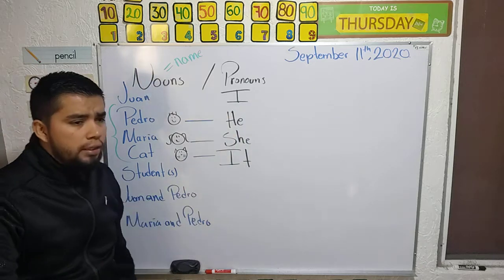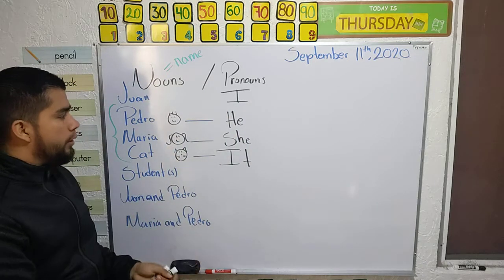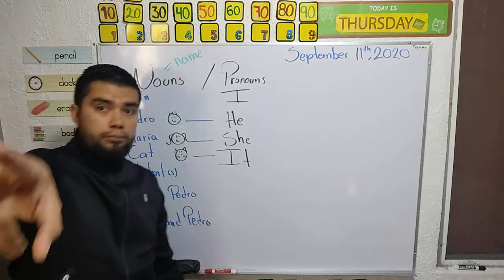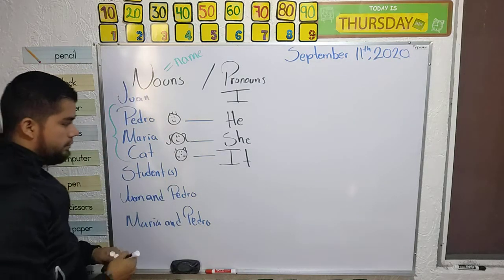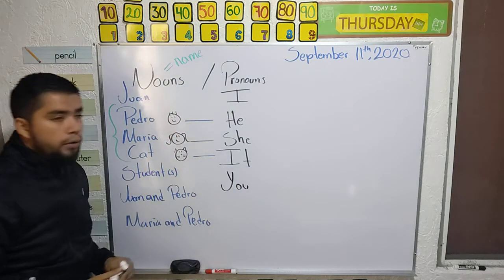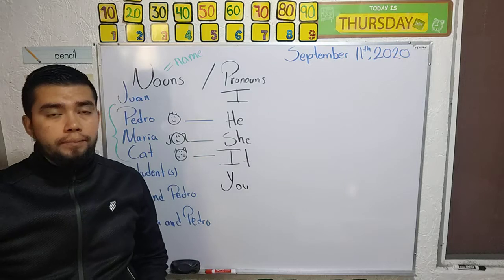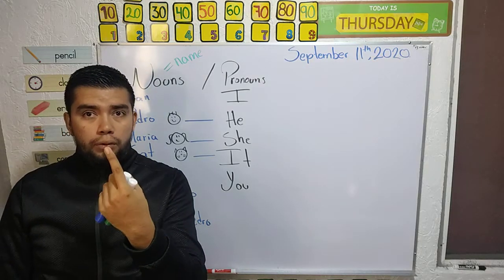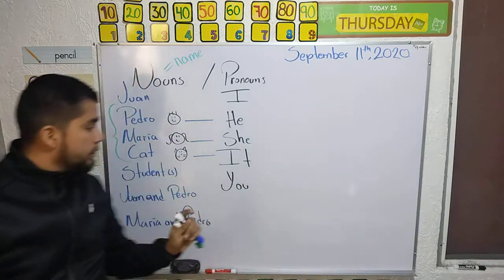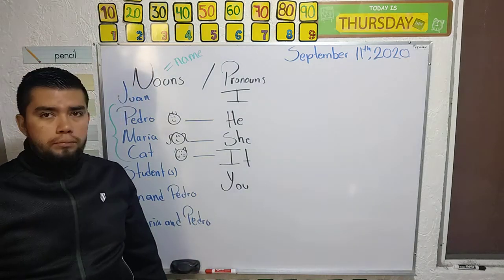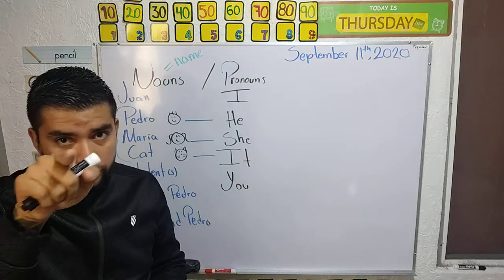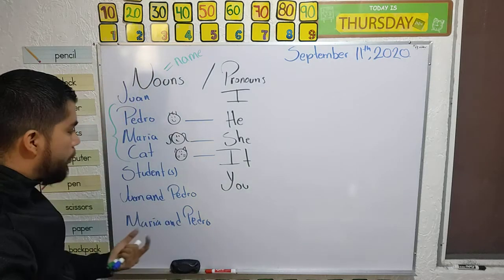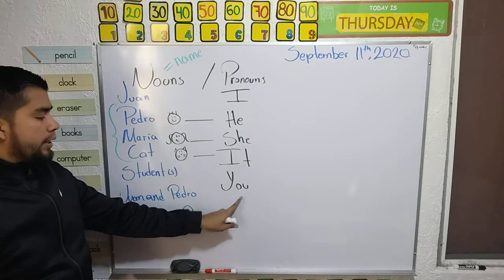Then we have 'student' — you. You are my students. So 'student' or 'students' — we use 'you', because it could be for one, two, three, four — plural. You could be face to face with one person, or in plural, all of you. So 'you' can be singular or plural, there is no problem.